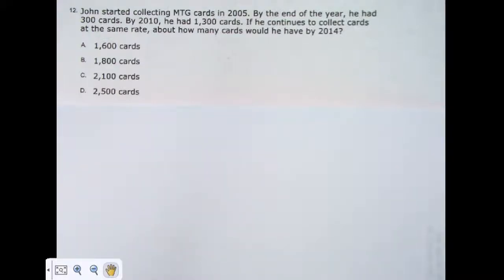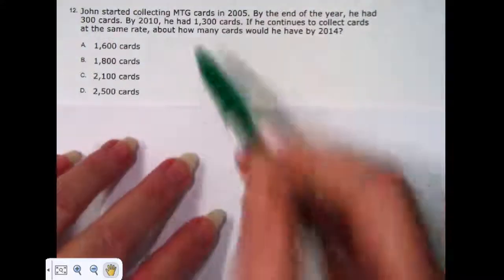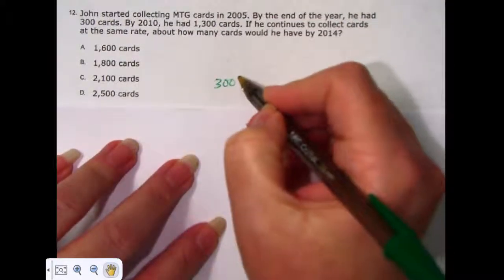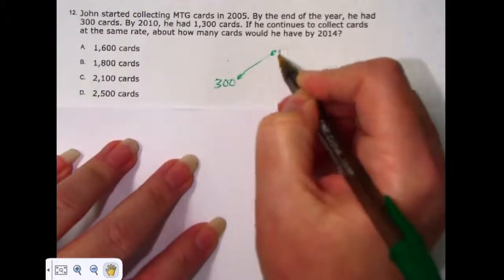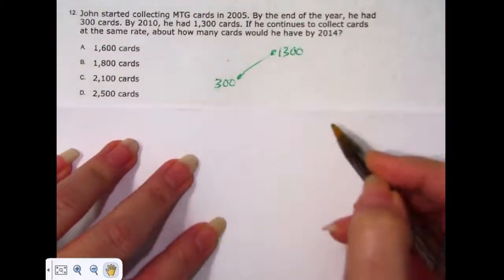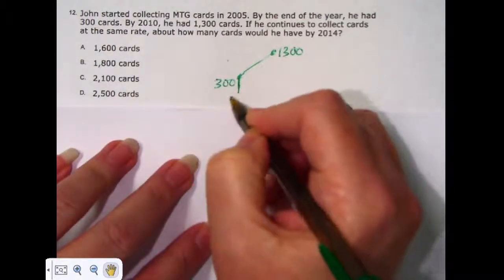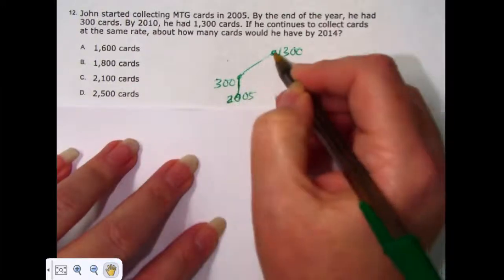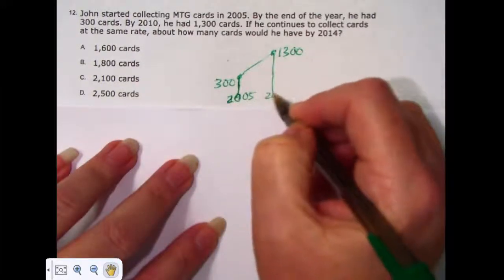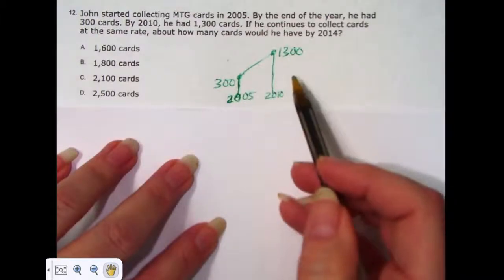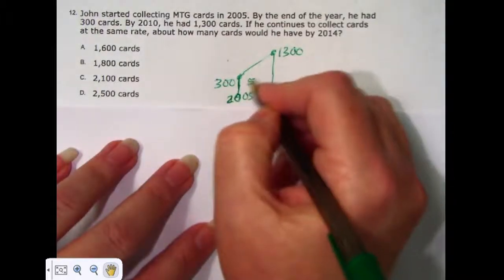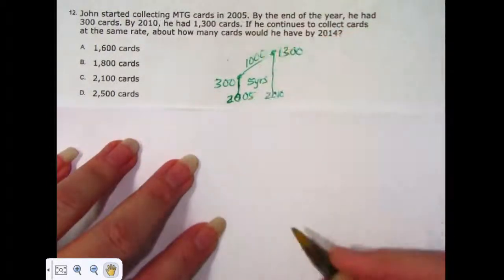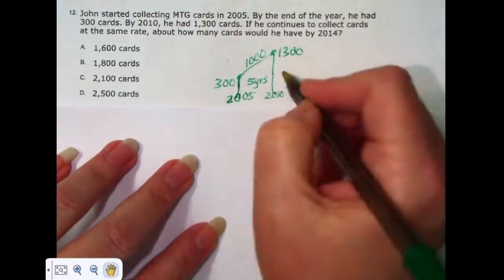So let's think about this situation. He started with 300 cards. By 2010, it grew to 1,300. This happened in 2005. This happened in 2010. How long did it take? It took five years. How much did it grow? 1,000 cards. How many per year? 200.